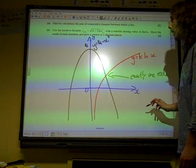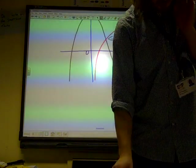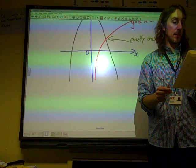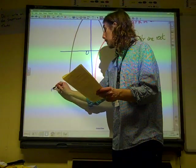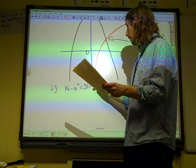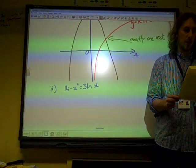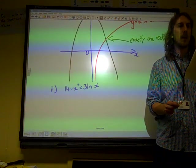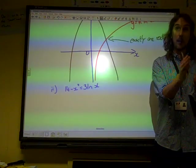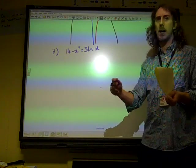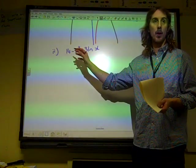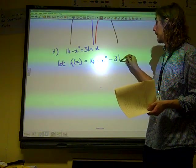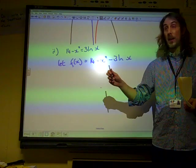Part two of this said that the real root, this root that is there, is denoted by alpha. So that is the root in part two of 14 minus x squared equals 3 ln x. Find by calculation the pair of consecutive integers between which alpha lies. Now, there are various ways you can do this, but we've talked about this. The way to sort this out is to create a function that makes this equal to zero. So I'm going to let f(x) be the function that is 14 minus x squared minus 3 ln x. In which case the root is when f(x) is zero.